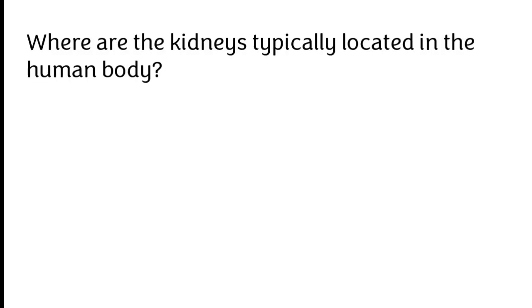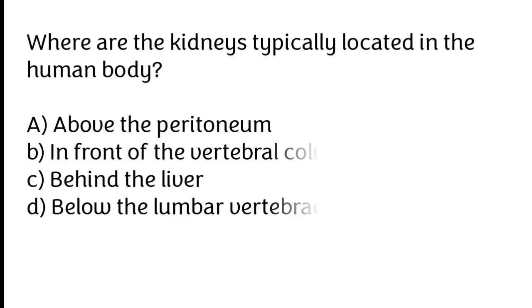Where are the kidneys typically located in the human body? A) Above the peritoneum, B) in front of the vertebral column, C) behind the liver, D) below the lumbar vertebrae.